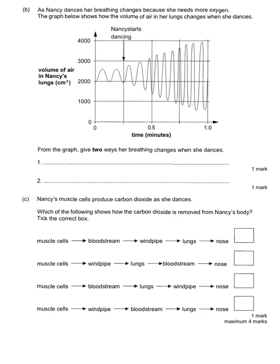This part of the question focuses on Nancy's breathing. It says that her breathing changes because she needs more oxygen and the graph below shows how the volume of air in her lungs changes when she dances. We've got time on the x-axis so this is the longer that she's dancing and then we've got the volume of air in Nancy's lungs.